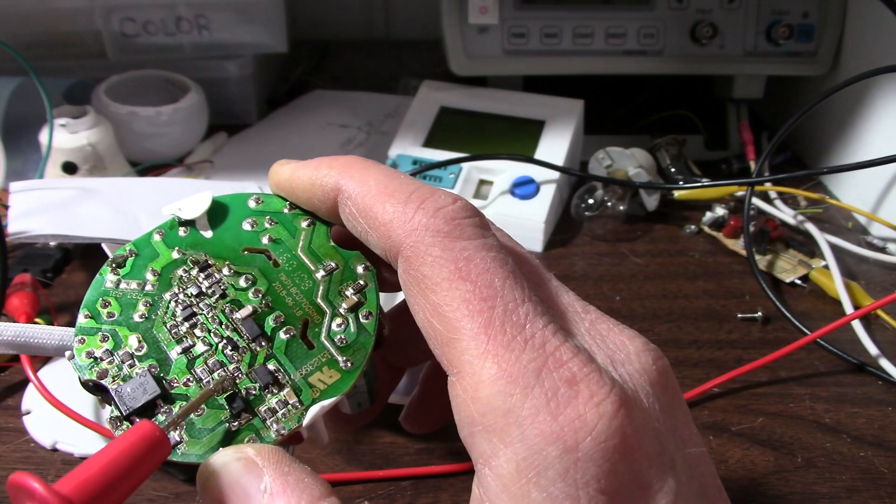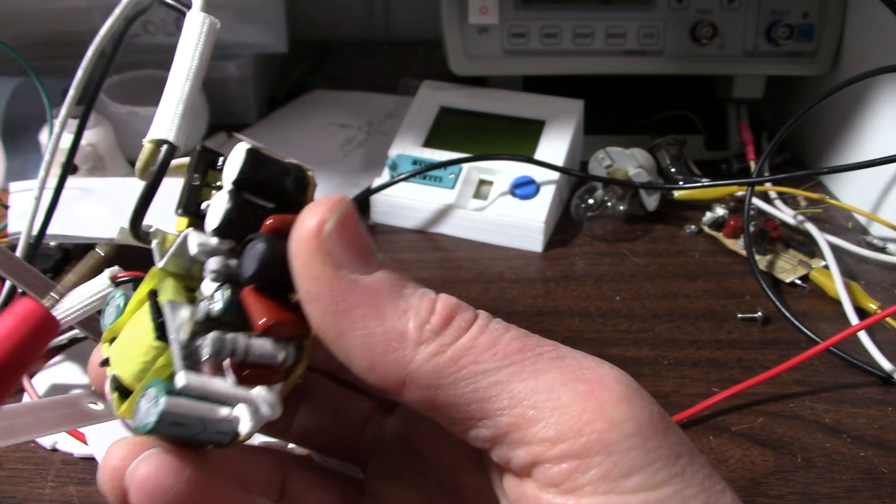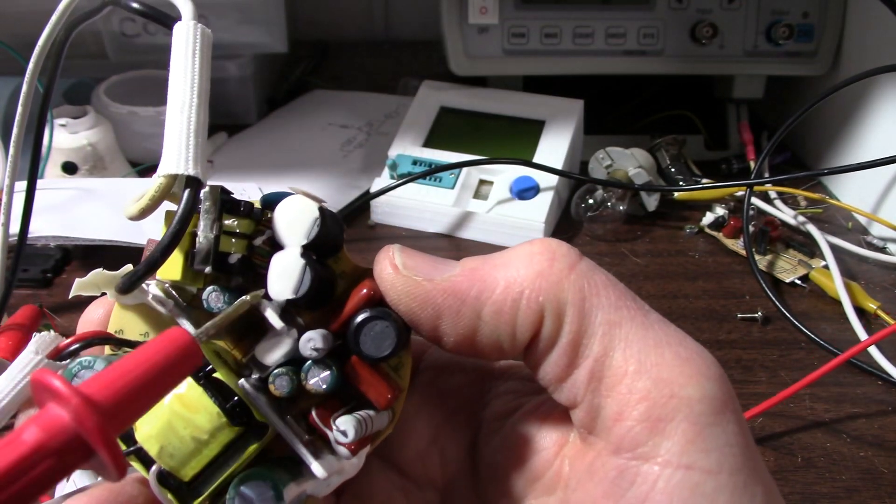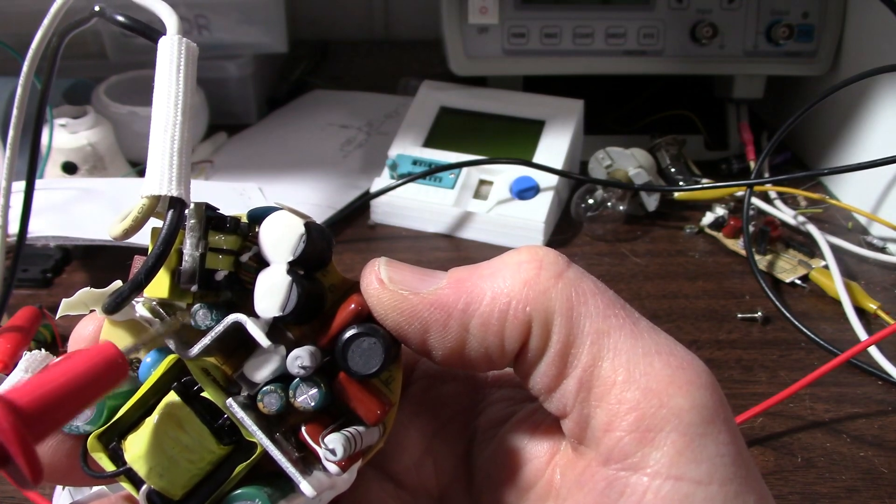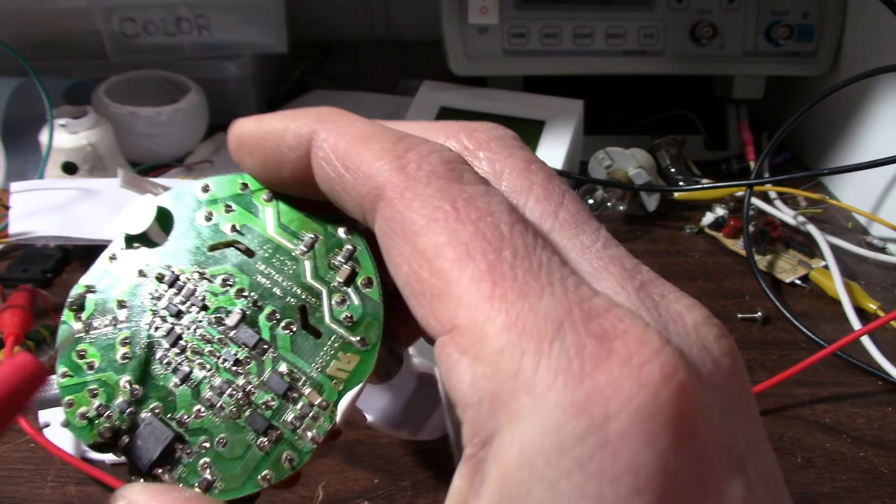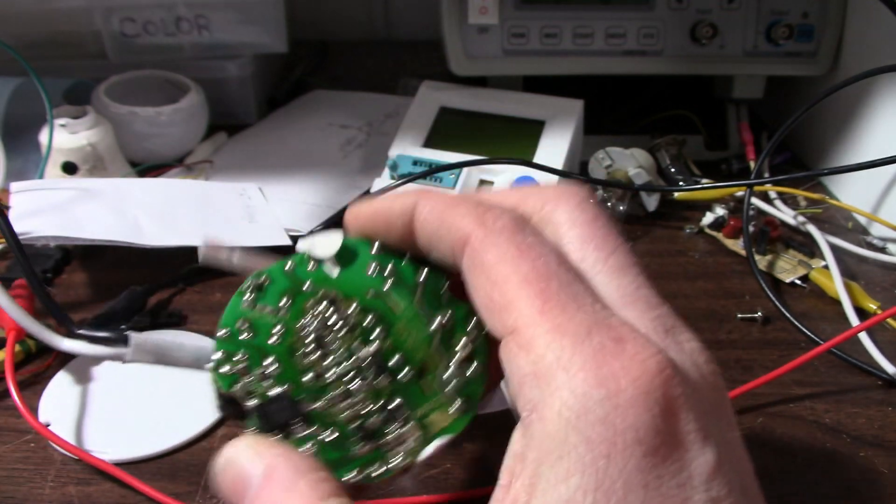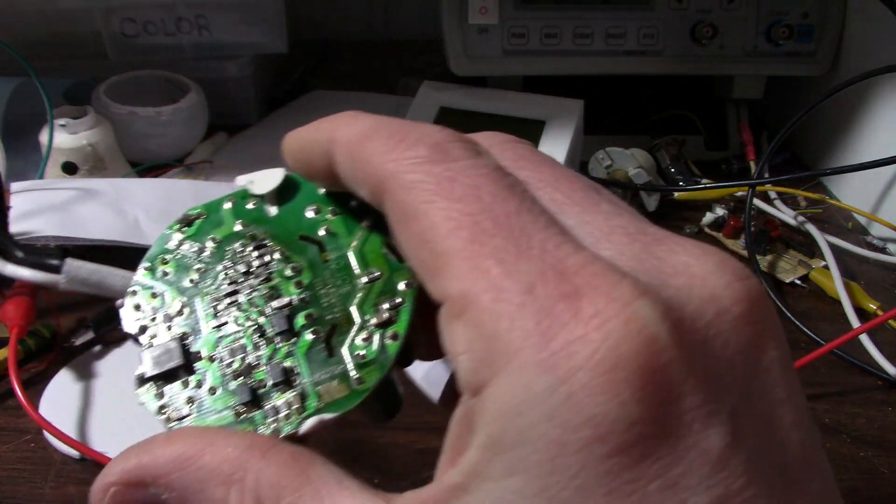As far as electrolytic capacitors go, they're all good. This one here is 22 microfarads, but I was getting a reading of 100, but that's because there is a surface mount resistor across its terminals and it's just skewing the meter. So I think that's okay.